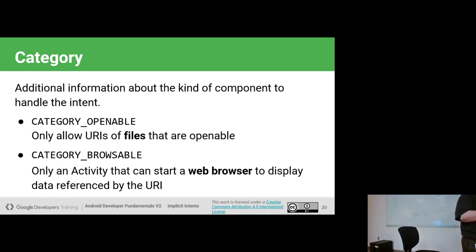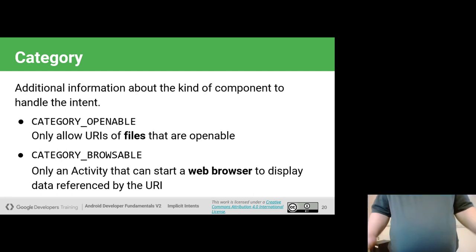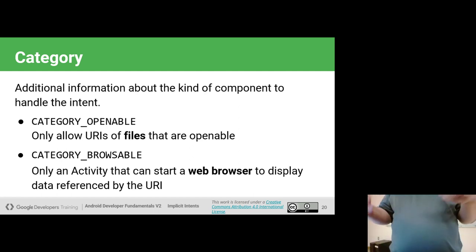There's also an additional thing we can set on intents called the category, which refines a bit more what type of thing you're doing. The category you've already seen is CATEGORY_LAUNCHER. There's also CATEGORY_HOME — if you specify ACTION_MAIN with CATEGORY_HOME, you're saying this activity can be a home screen. That's all you have to do to declare that. CATEGORY_OPENABLE says you can take any URI that maps to an openable file on the system.